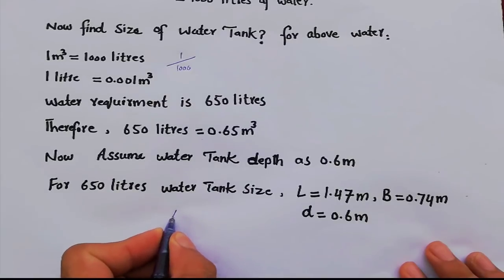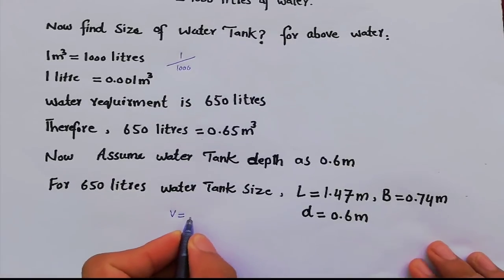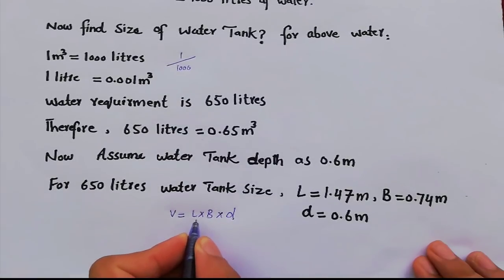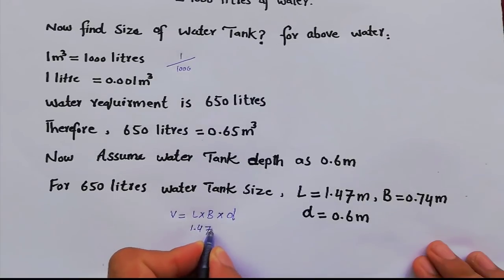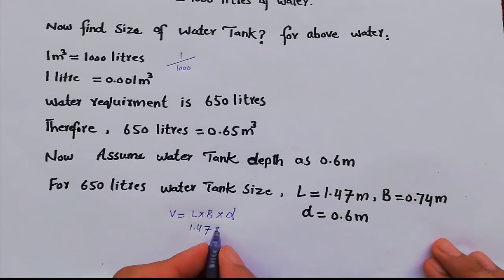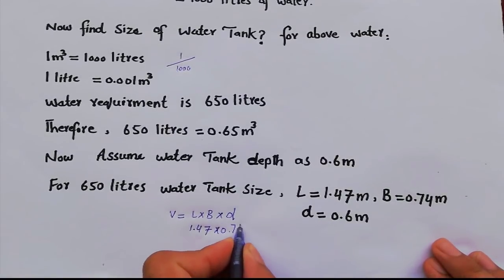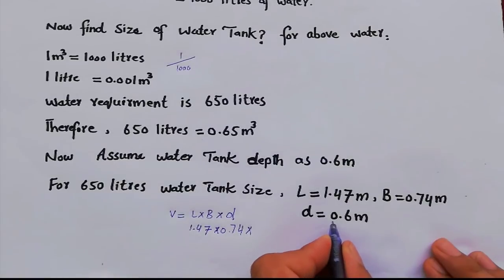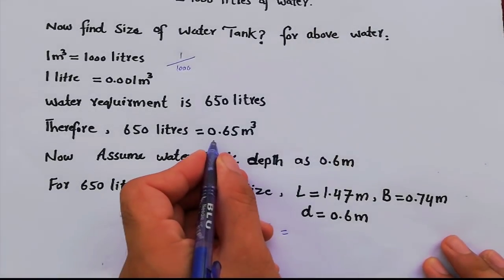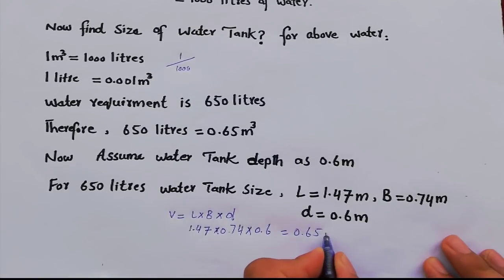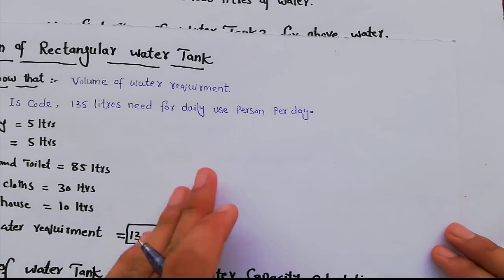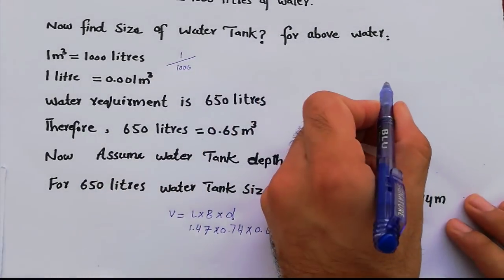When you find the volume of the water tank: L × B × D = 1.47 × 0.74 × 0.6, which gives us 0.65 cubic meters. So this confirms the water tank volume of 0.65 m³.